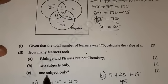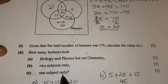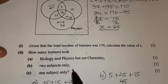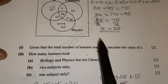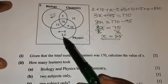But you see, they are saying how many learners took one subject only? So one subject only, it means they want you to find the learners that were not on the intersection. Meaning we are going to pick this, that, and that.